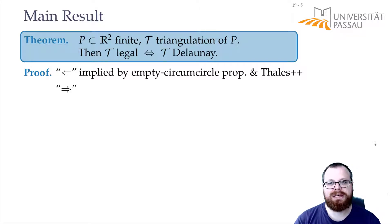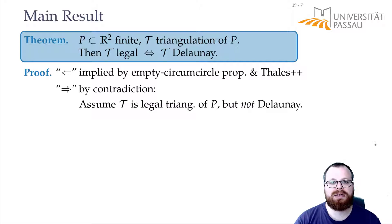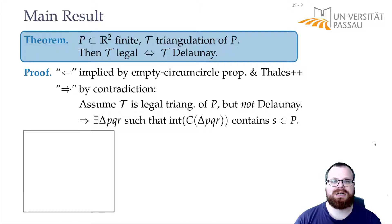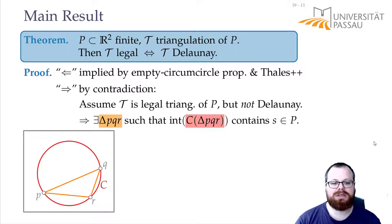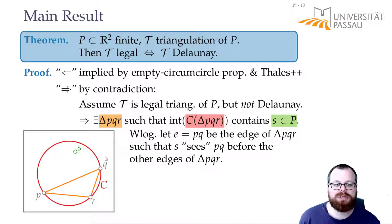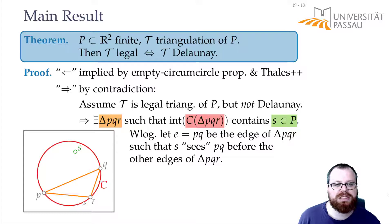The other direction is not so easy. Let's assume we have a legal triangulation that is not Delaunay. Then there has to be some triangle with vertices P, Q, and R such that the interior of its circumcircle contains a vertex S. So let's look at this triangle and its circumcircle, and this point S that lies inside. Without loss of generality we can relabel all these vertices such that edge PQ is the one that S sees inside the circle. We call this edge E.